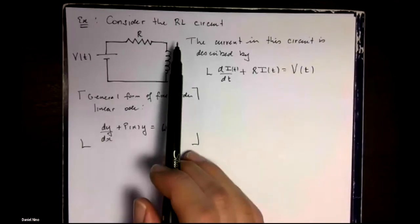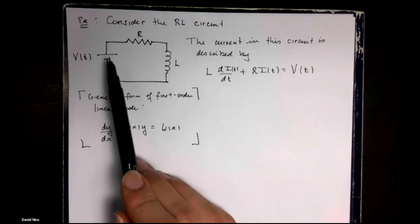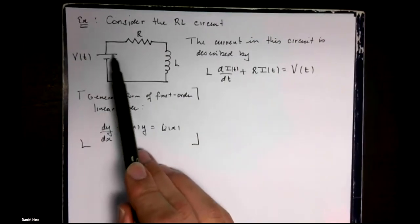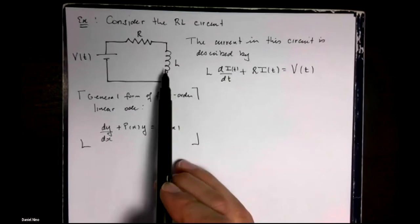And for that, we'll consider the following RL circuit. An RL circuit is something that has a source, a resistance, and an inductance.